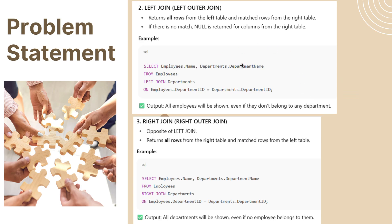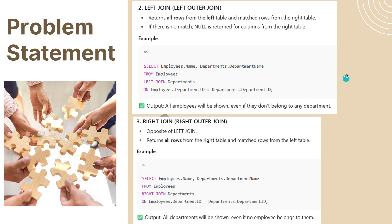Left join or left outer join returns all rows from the left table and matched rows from the right table. If there is no match, null is returned for columns from the right table. Right join is the opposite — it returns all rows from the right table and matched rows from the left table. Have a screenshot if you want to refer to the syntax.